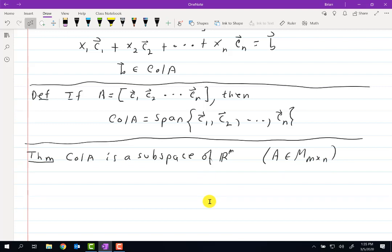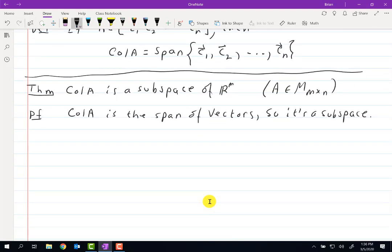And well, I don't know if there's much to prove here. The proof is very simple. Column space of A is the span of vectors, so it's a subspace. Not much to do there. But another variation on this, if you think about it: